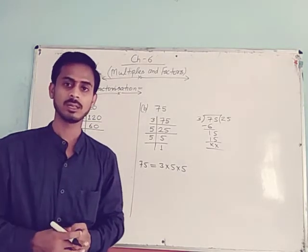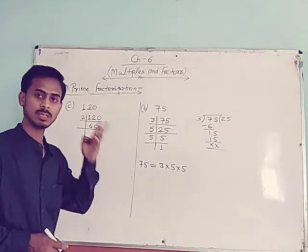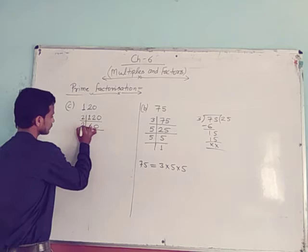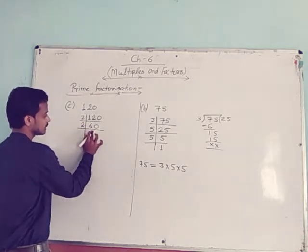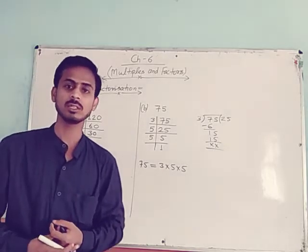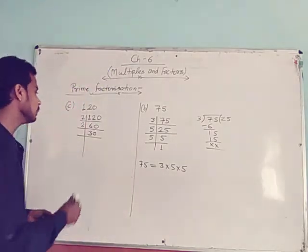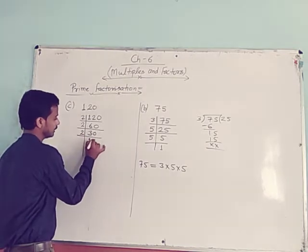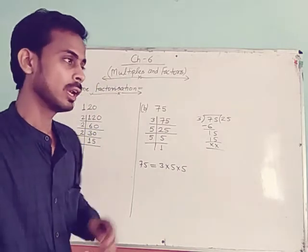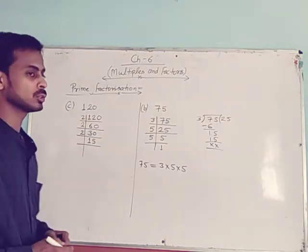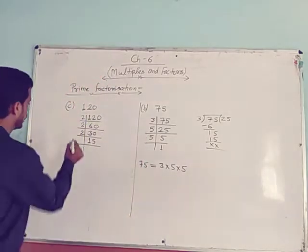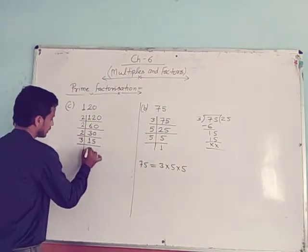Again, there is a 0 in the ones digit of 60, so it is divisible by 2 again. Divide 60 by 2 to get 30. Again, 30 is divisible by 2. Divide 30 by 2 to get 15. Now 15 is not divisible by 2, so we take 3. Divide 15 by 3: 3 × 5 = 15.